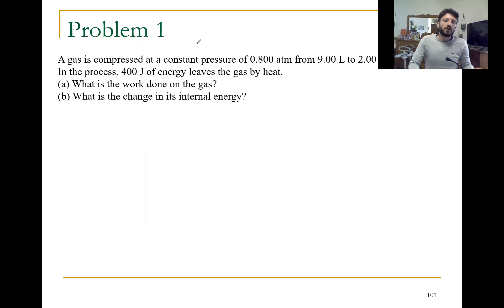Problem one: we have a gas compressed at a constant pressure of 0.8 atm. Initially we have state A, we go to state B. We go from state A to state B at constant pressure, so PA equals PB, which equals 0.8 atm.